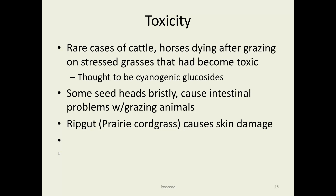Toxicity: not too many problems with the Poaceae, although there are cases of horses and cattle that have grazed on stressed grasses thought to produce cyanogenic glycosides under drought stress, and these have killed cattle and horses. There are more problems when animals eat the more bristly seed heads, which can cause intestinal problems from the bristles lodging or causing irritation internally. In Iowa, prairie cord grass and some other grasses are so rough on the edges that they cause skin damage just from brushing against them. 'Ripgut' has been named for the damage it does to cattle walking in sloughs with a lot of prairie cord grass.